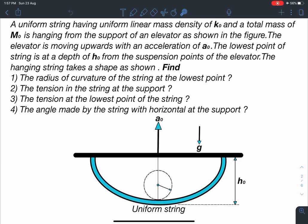So here is the statement of this problem. A uniform string having a uniform linear mass density of k0 and a total mass of m0 is hanging from the support of an elevator as shown in the figure.